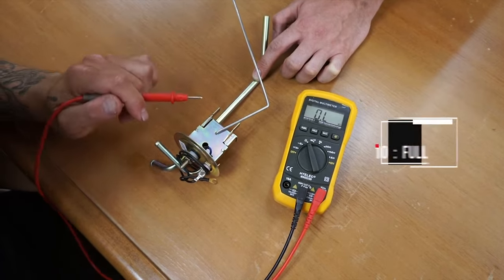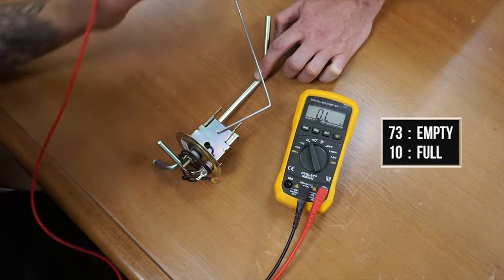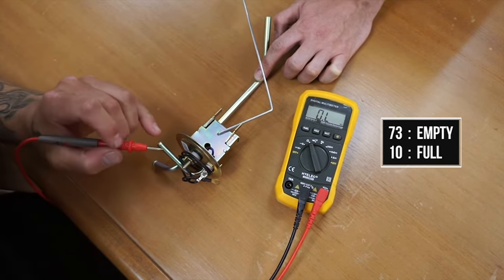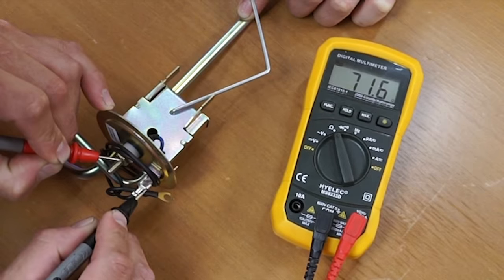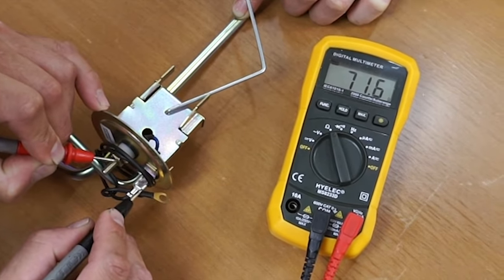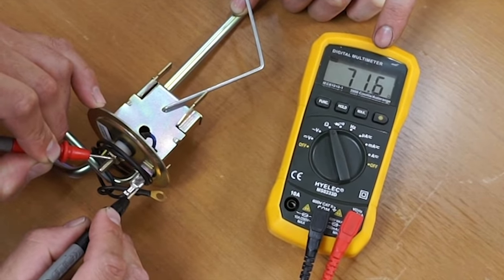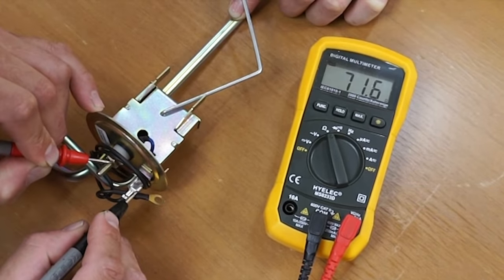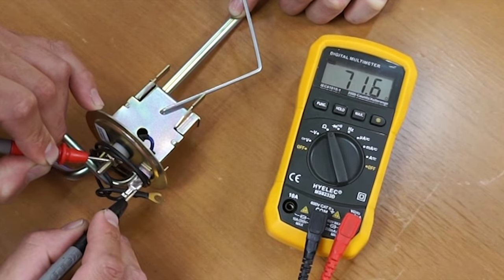We know this particular sending unit is 73 ohms empty and 10 ohms full. So we want to get as close to that as possible. Keeping an eye on the ohm meter, we can see that we're getting close to 73. That should be close enough that it won't affect the reading hardly at all.